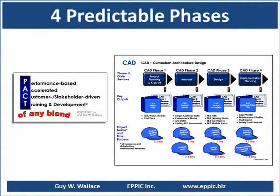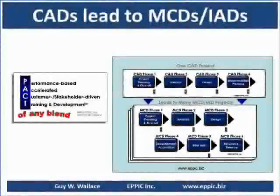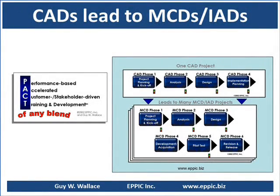The curriculum architecture design methodology is intended to be predictive in terms of the cycle time, the burden on all participants, and the costs, as well as the quality of the output. The curriculum architecture design efforts do not produce any new content — they simply define what is required to enable performance, what exists that can be used as is or after modification, and what the gaps are. That leads to modular curriculum development efforts and instructional activity development efforts to build out the gaps or to complete the content that needs modification.